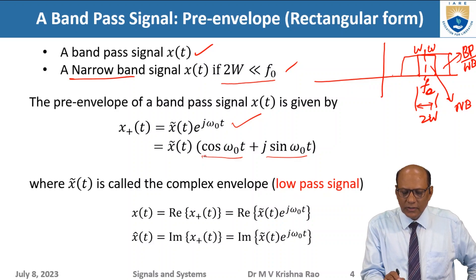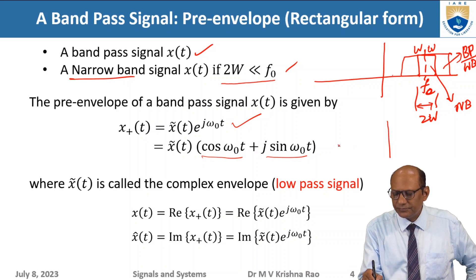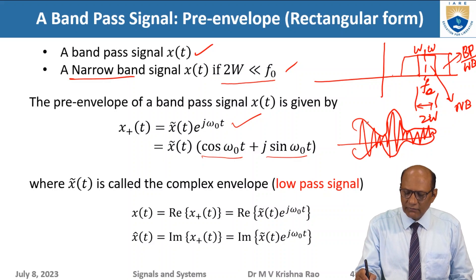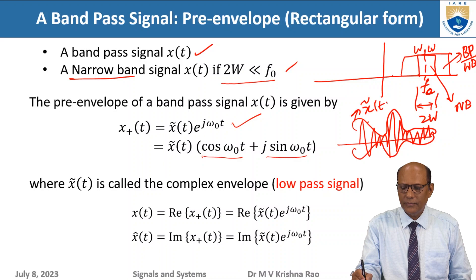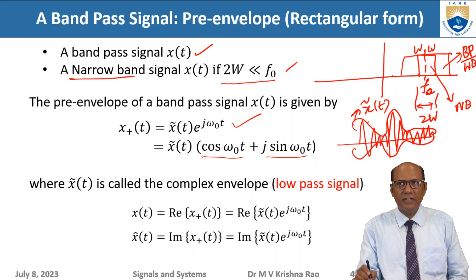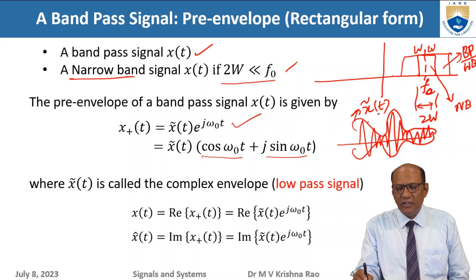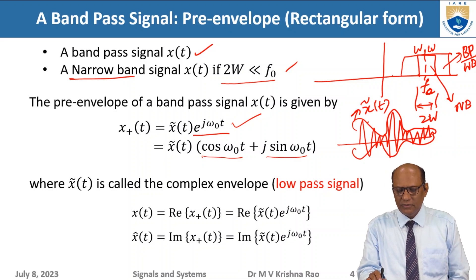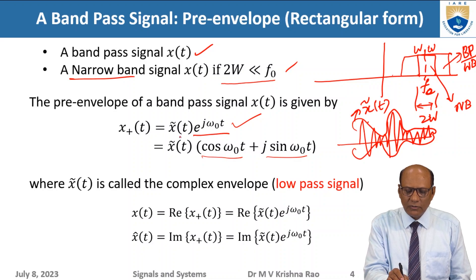The complex envelope x-tilde represents the outer envelope of the signal — a low frequency component. This low pass envelope is then modulated with the high frequency carrier e to the power of j-omega-naught-t. The product gives the pre-envelope x-plus(t). The actual original signal x(t) is obtained by taking the real part of the pre-envelope, and the Hilbert transform is the imaginary part.